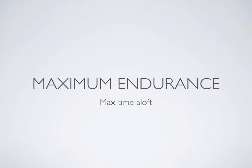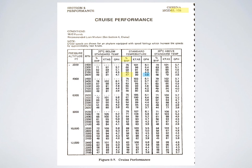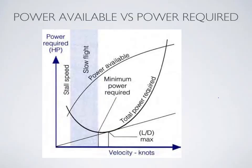Now let's look at maximum endurance. From the POH performance charts, we had 45% power as our best endurance power setting, but as we reduce power we can also reduce our fuel burn. Since our goal is to stay in the air for as long as possible, the question is: can we reduce power and fuel burn below 45% and remain airborne? We'll find the minimum amount of power required to maintain altitude.